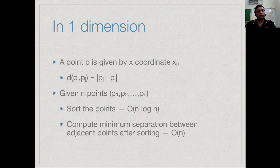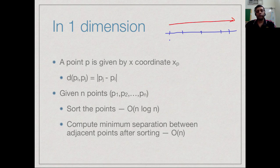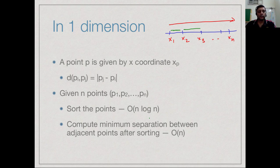Let us first consider the same problem if we had only one-dimensional points. All these points lie along a line, which we can assume is the x-axis. What we can do is first sort them so that we have the points in increasing order of x coordinate. Then it is easy to see that we only need the distances between adjacent points, because the nearest point to any given point is either the one on its left or the one on its right. So we just scan the n−1 distances x2−x1, x3−x2, and so on, and keep track of the smallest gap. The algorithm is O(n log n) because sorting takes O(n log n) time; after that, finding the minimum is very easy.